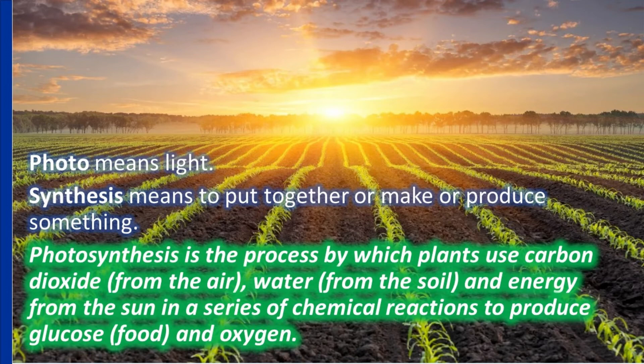What does photosynthesis mean? Photo means light. Synthesis means to put together, make, or produce something. By definition, photosynthesis is the process by which plants use carbon dioxide from the air, water from the soil, and energy from the sun in a series of chemical reactions to produce glucose and oxygen. Photosynthesis is a process which takes place in the green leaves of plants, where plants use the sun's light energy to make their own food, specifically glucose.